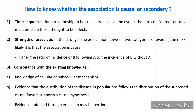How to know whether an association is causal or secondary — there are three parameters. First, time sequence: for a relationship to be considered causal, the events considered causative must precede those thought to be effects. For example, smoking and cancer: smoking should precede the occurrence of the outcome, cancer. Second, strength of association.